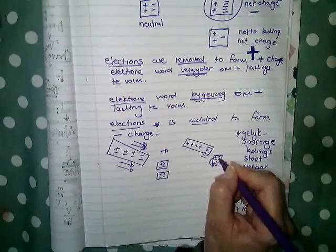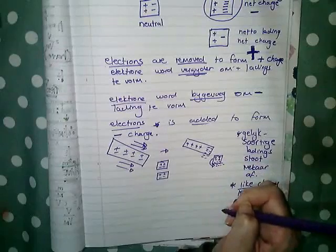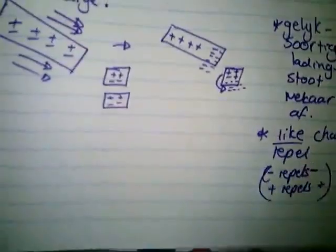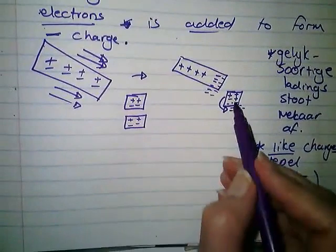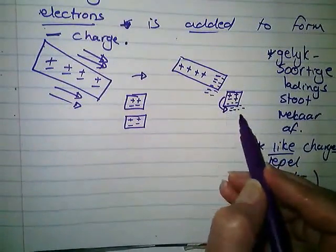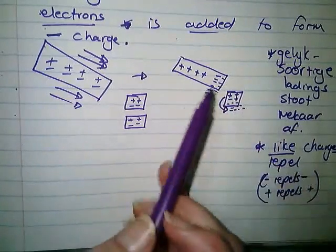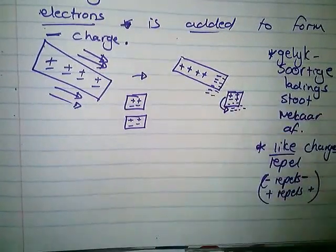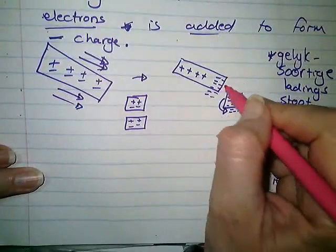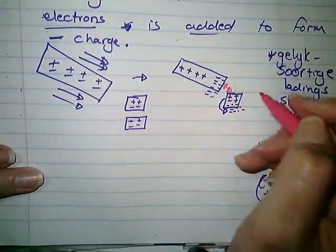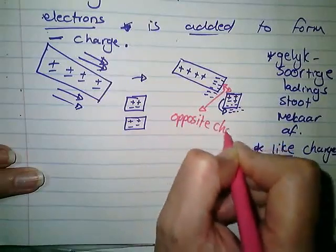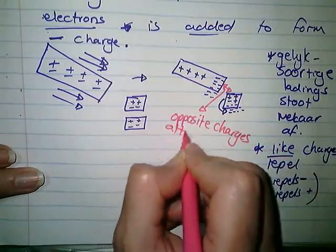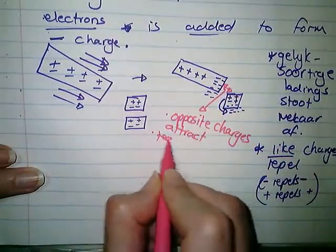And you're leaving behind positive charges. So daar bly positieve ladings oor in die papertje, en die negatieve ladings accumulate onder, aan die verste kant weg van die lineal af. Now you have positive and negative charges next to each other and opposite charges attract. Opposite charges attract. Teengestelde ladings trek mekaar aan.